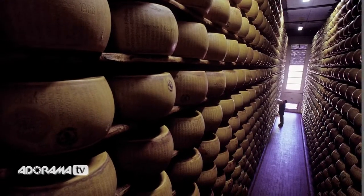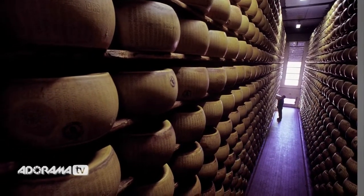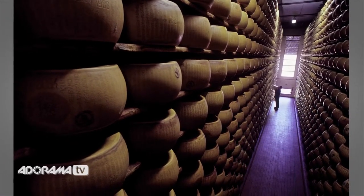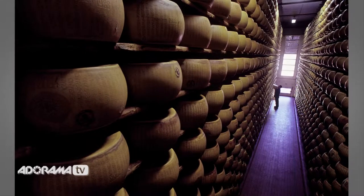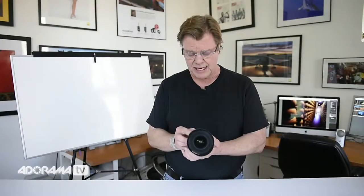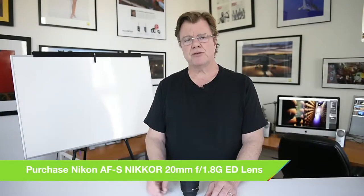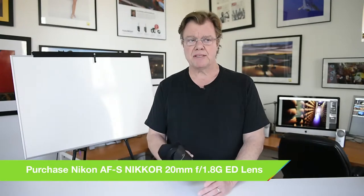Behind me is a giant array of Parmesan cheese wheels in Parma, Italy, and I shot this obviously with a wide-angle lens. Nikon just came out with a 20mm f1.8, which is fast glass, and historically the 20mm for me as a fixed wide angle was always my favorite. I love the 20mm perspective — nothing against zooms or anything like that, but I'm very happy this lens has come along.